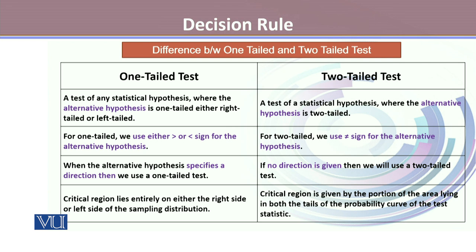Here is the difference between one-tailed and two-tailed tests. A one-tailed test is a test of any statistical hypothesis where the alternative hypothesis is one-tailed — either right-tailed or left-tailed. A two-tailed test is one where the alternative hypothesis is two-tailed. For one-tailed tests, we use either a greater-than or less-than sign for the alternative hypothesis, but in a two-tailed test, we use the not-equal sign. When the alternative hypothesis specifies a direction, we use a one-tailed test; if no direction is given, we use a two-tailed test.